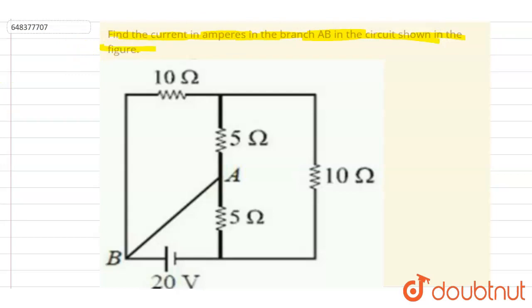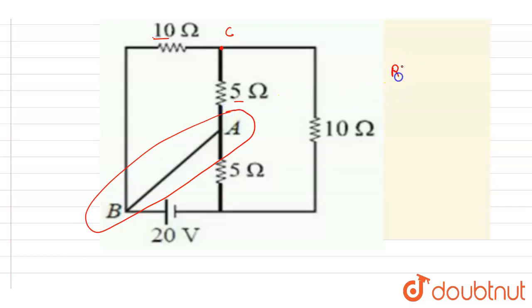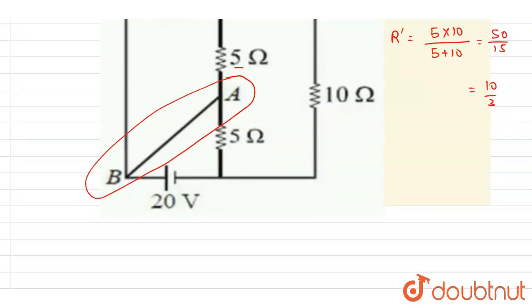Here, this 10 ohm and this 5 ohm are in parallel. If I call this point C, both are connected between A and C, so A and B are at the same potential — they are shorted. The equivalent resistance for two parallel resistors is R1·R2 divided by R1+R2, which gives 50 divided by 15, equal to 10/3 ohms.